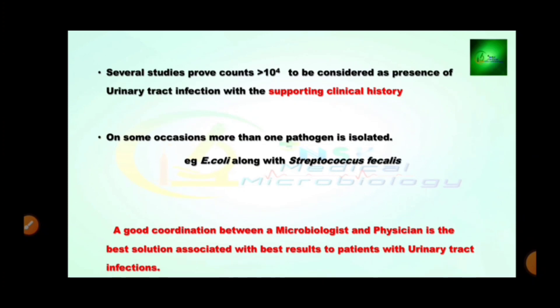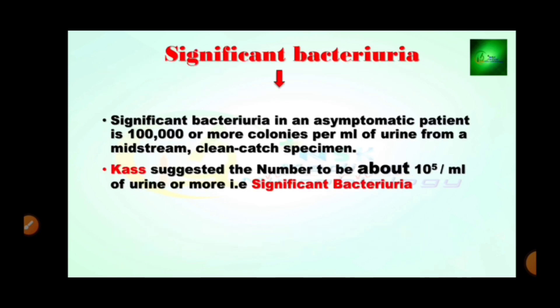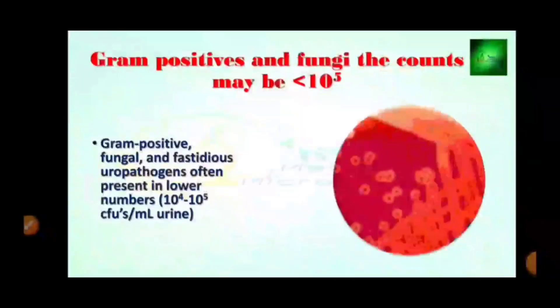On some occasions, more than one pathogen is isolated, such as E. coli along with Streptococcus faecalis. Good coordination between the microbiologist and physician is the best solution for best results in patients with urinary tract infections. Significant bacteriuria is defined as 10⁵ or more colonies per ml of urine from a midstream sample. Gram-positive and fungi counts may be more than 10⁵, while gram-positive, fungal, and fastidious uropathogens often present at lower numbers — 10⁴ to 10⁵ colony-forming units per ml of urine.